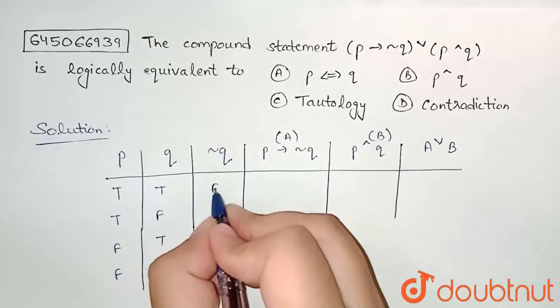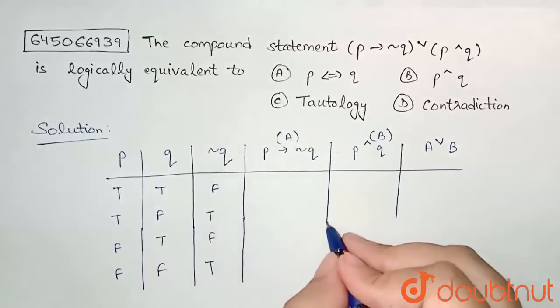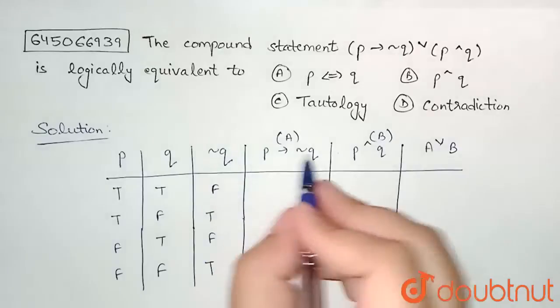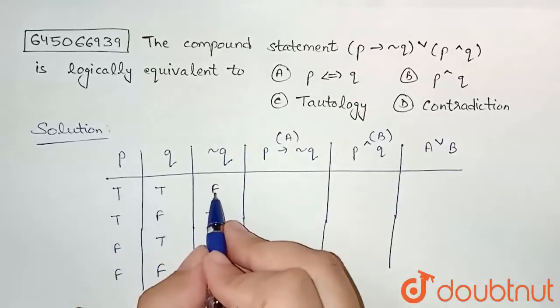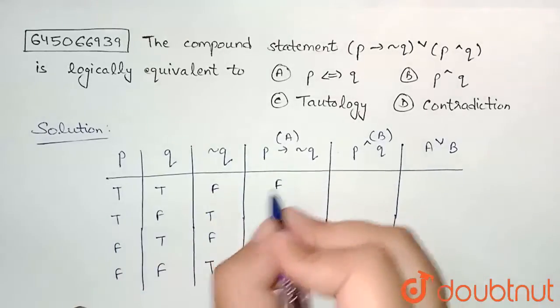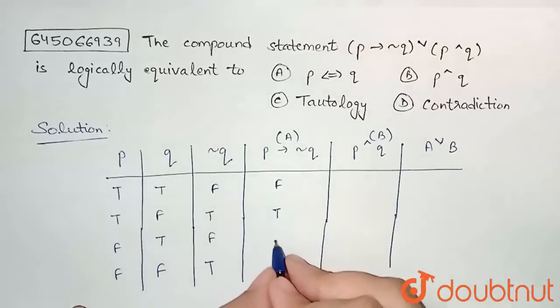Now we need p implies negation q. That means true implies false will be false, true implies true will be true, false implies false again true, and false implies true will also be true.